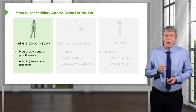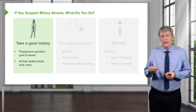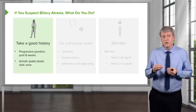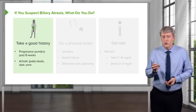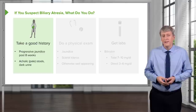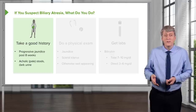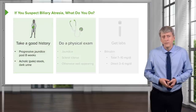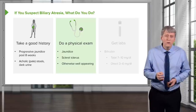These children will often have acholic or pale stools because the child is not able to extrude the bile, which is the main source of pigment in stool. These stools look almost chalky and white in nature. The child will also have dark urine because bilirubin levels are spilling into their urine. On exam, you will of course see the jaundice and scleral icterus.